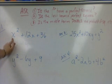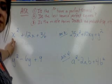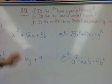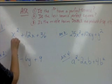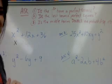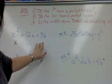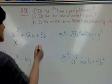Is the first term a perfect square? Yes. The perfect square x squared, its square root would be x, and I like to write it right underneath. Is the last term a perfect square? In this case 36 is a perfect square, its square root is 6.